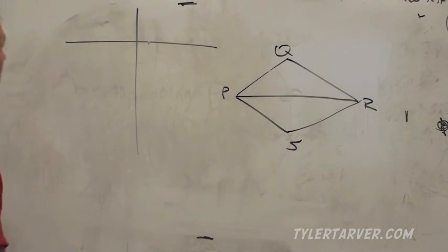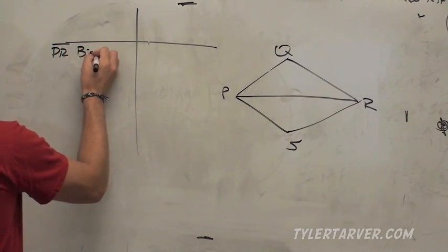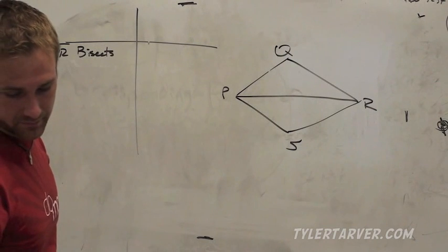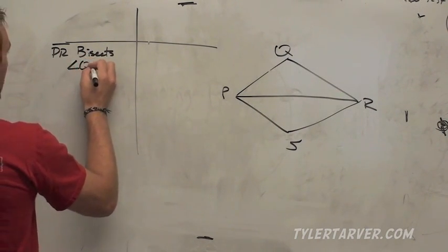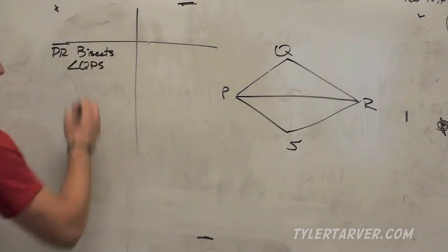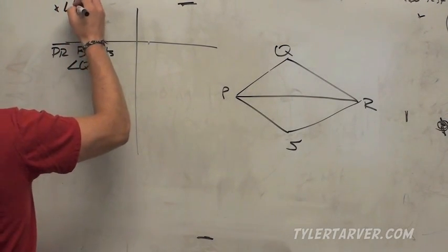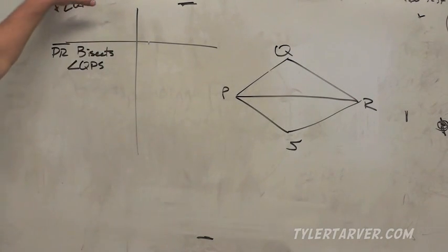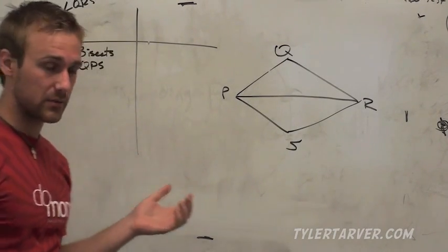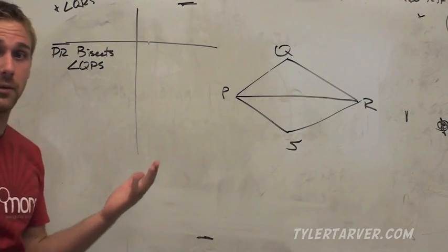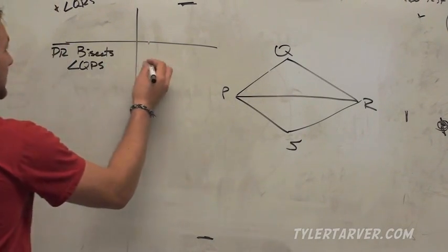So we've got PR bisects QPS, angle QPS, and I'm guessing the other angle, I don't know why I'm looking down here, angle QRS. Now that would say it up here at the given, but I want to go ahead and start this because I ain't got time to mess around writing stuff a bunch of times. But apparently I've got time to mess around and take up the same amount of time explaining to you why I'm not writing it down. So I don't know why I'm even still talking. So that's the given.